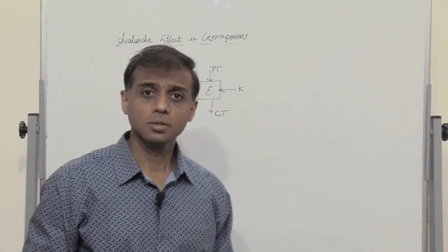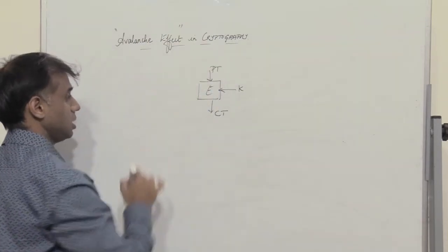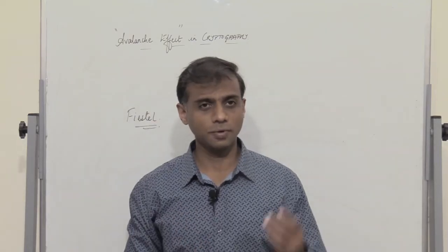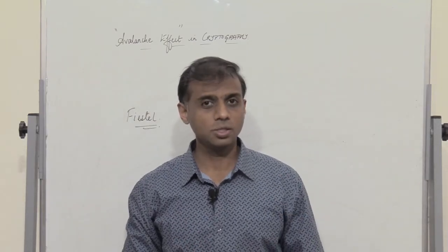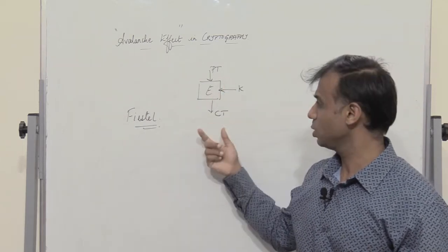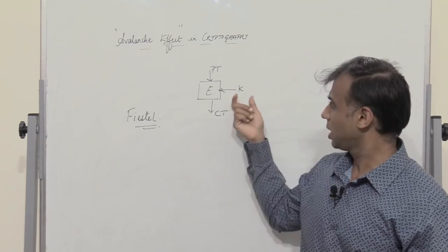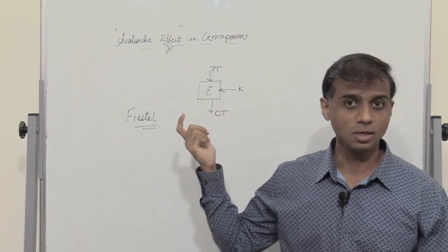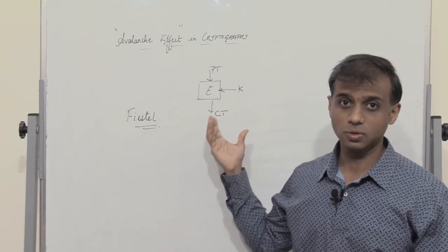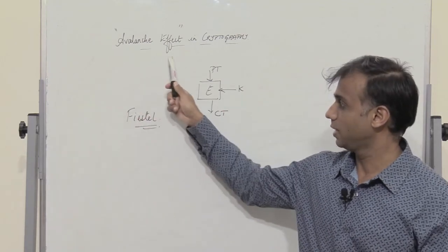And this effect or this specific behavior is known as the avalanche effect. So this word, the avalanche effect in cryptography, was actually coined by Feistel. So when you solve problems or when you run algorithms, make sure that you make a slight change in the plain text and using the same key you would observe a very large change in the ciphertext, or by making a small change in the key you would get a significant large change in the ciphertext. So this effect which is very much desirable is known as avalanche effect.